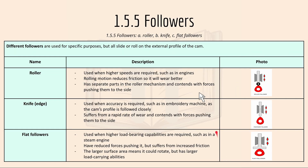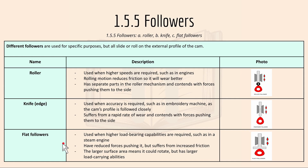1.5.5 is followers. Different followers are used for a specific purpose, but all slide or roll on the external profile of the cam. A roller follower is used when higher speeds are required such as in engines — rolling motion reduces friction so it wears better. A knife or edge follower is used when accuracy is required such as in an embroidery machine, as the cam's profile is followed closely, but it suffers from rapid wear. A flat follower is used when higher load-bearing capabilities are required such as in a steam engine — it has reduced side forces but suffers from increased friction which produces heat, and the larger surface area gives larger load-carrying ability.